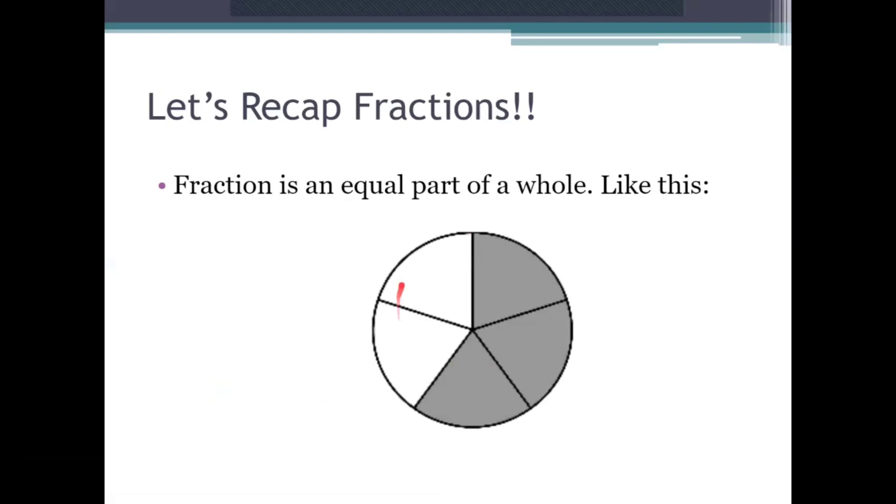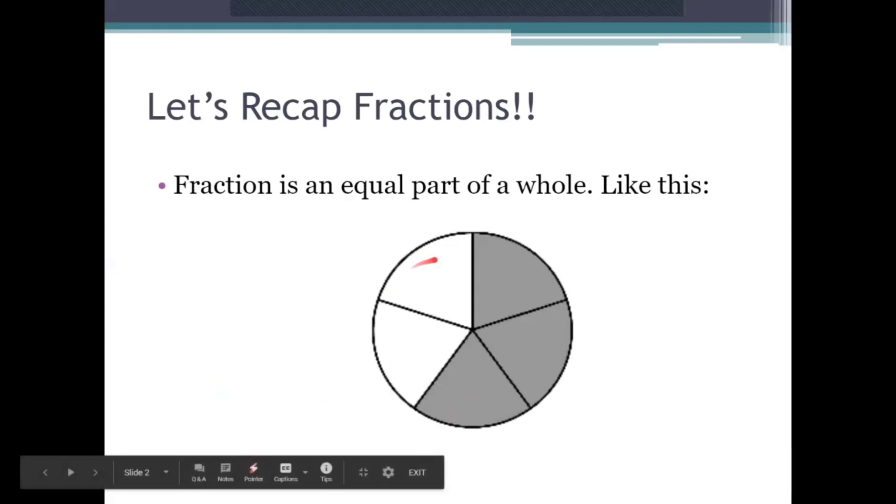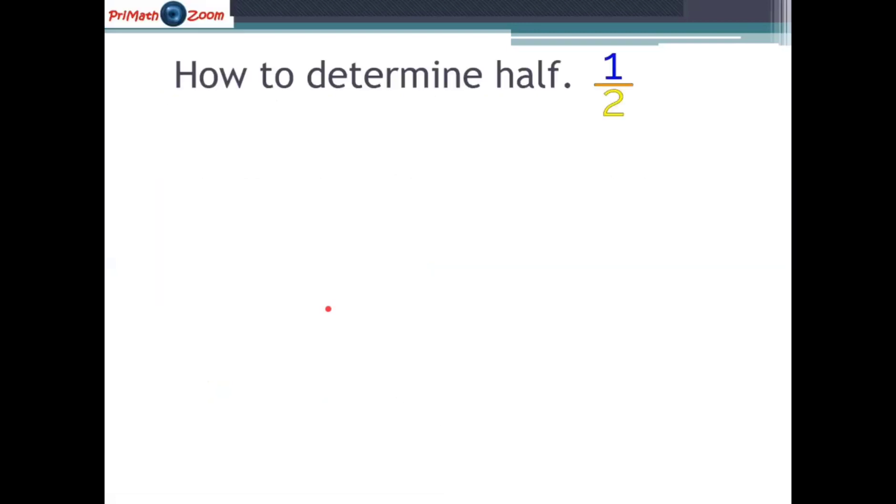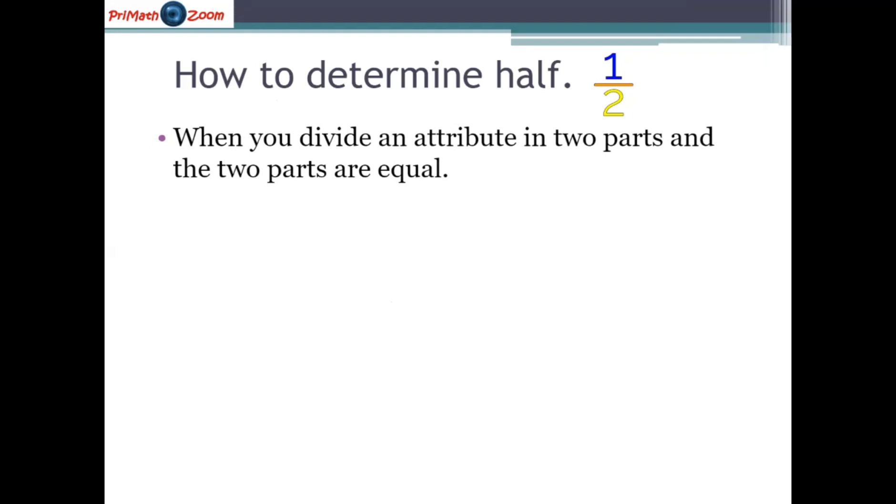Here you'll see a shape divided into equal parts. How can we determine a half? When we divide an attribute in two parts and the two parts are equal, we can say that each part is called a half.